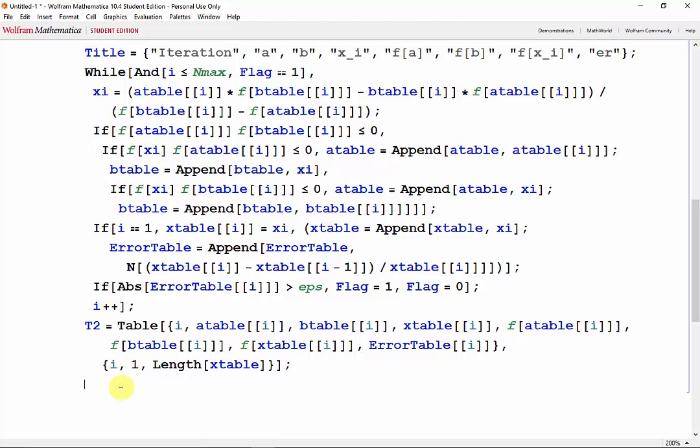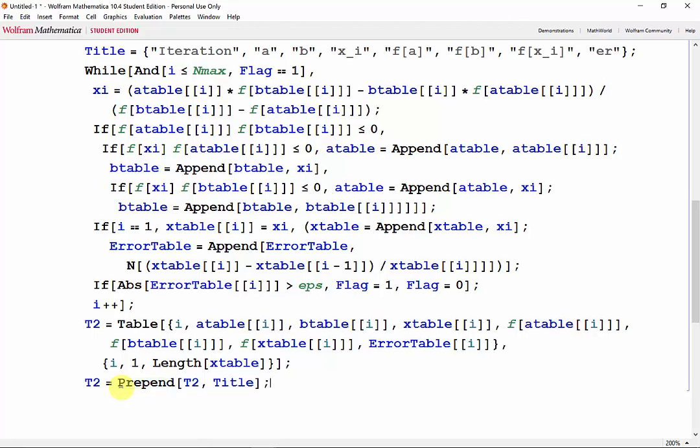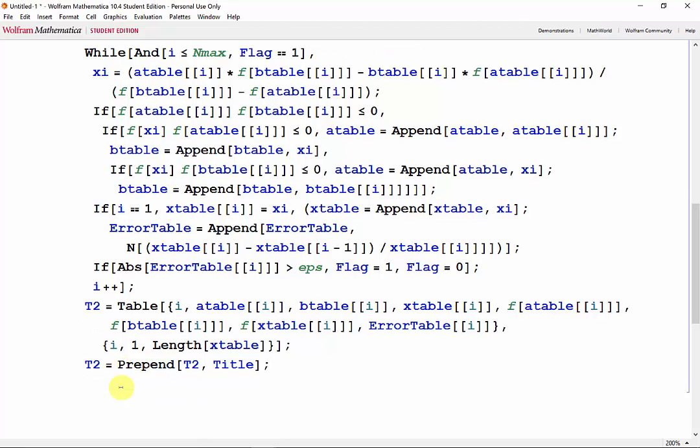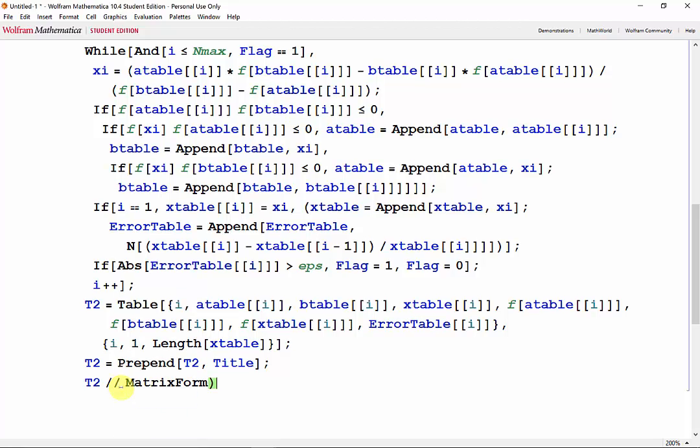And i will go from 1 to the length of xtable. And then Prepend adds our title to the first row of the table, and finally MatrixForm displays our table. Shift enter.